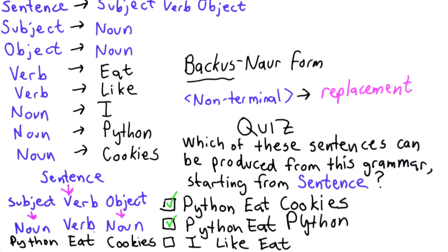We could replace the second noun with Python using instead the second choice. That would derive the second sentence.